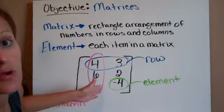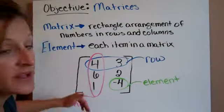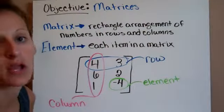Columns go up and down. So this one has 2 columns. I have 4, 6, 1 in a column, and 3, 2, negative 4 in a column.